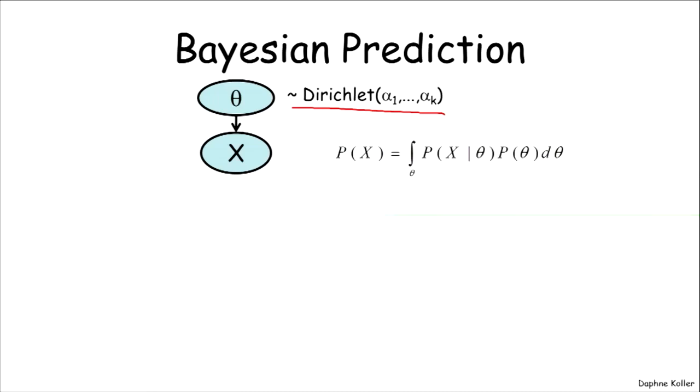Now, if we're trying to make a prediction over the value of a variable x that depends on the parameter theta, well, this is just now a probabilistic inference problem.